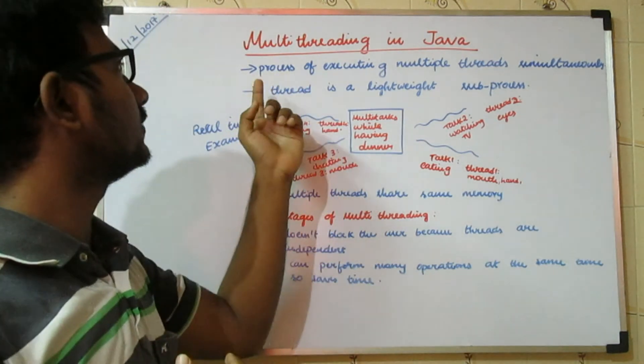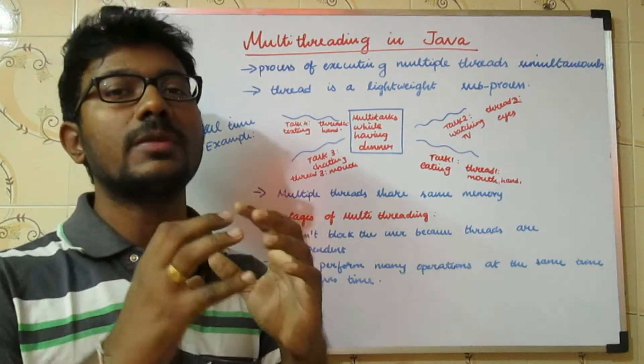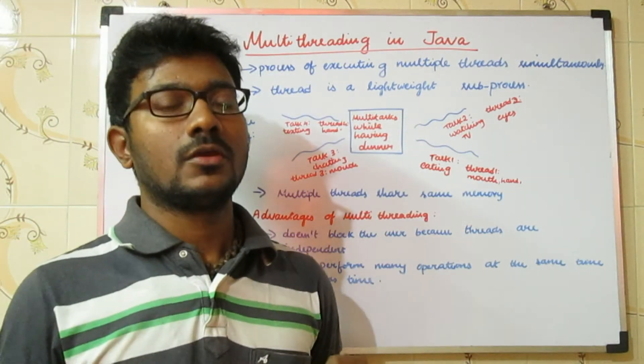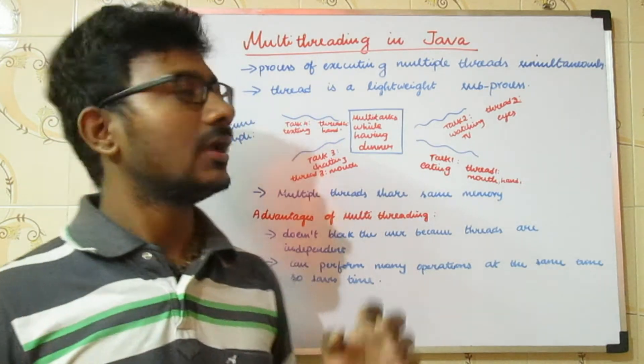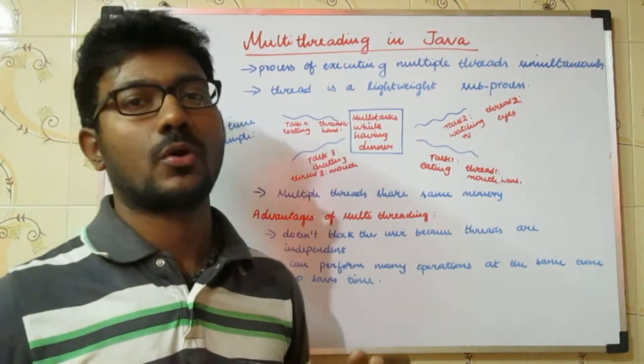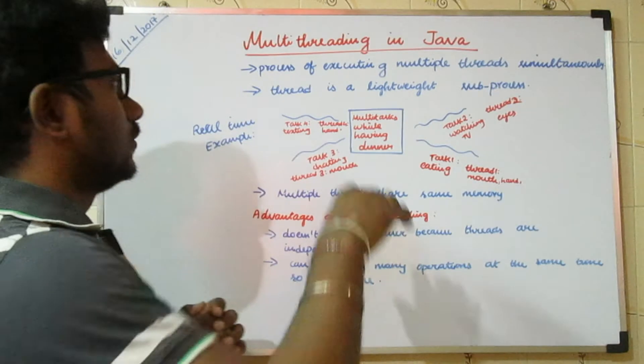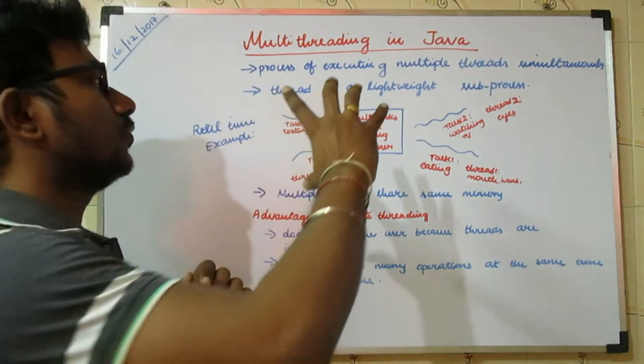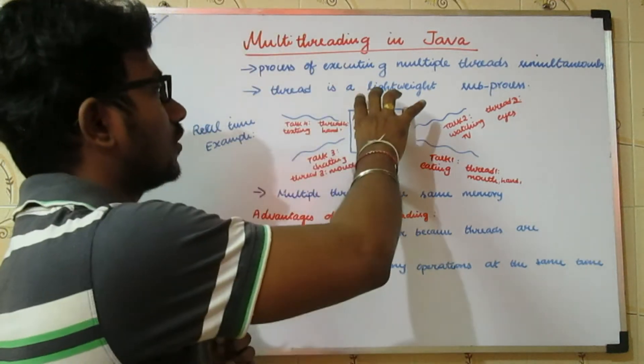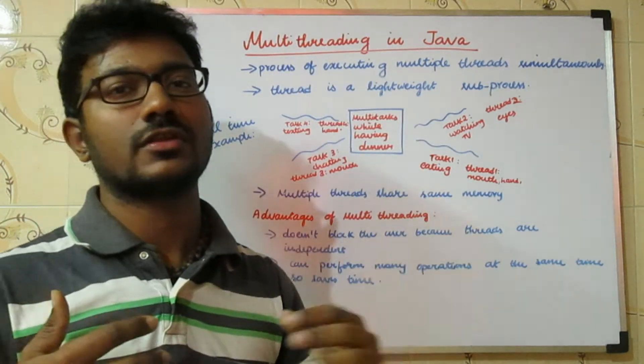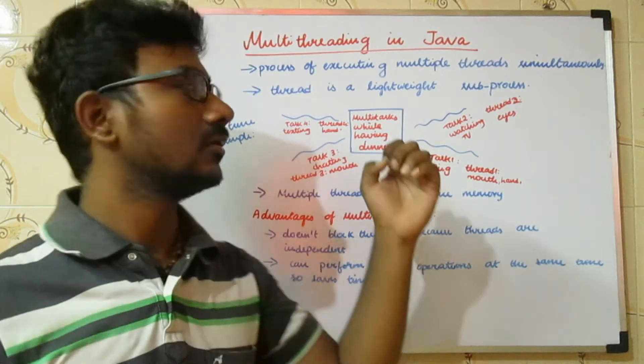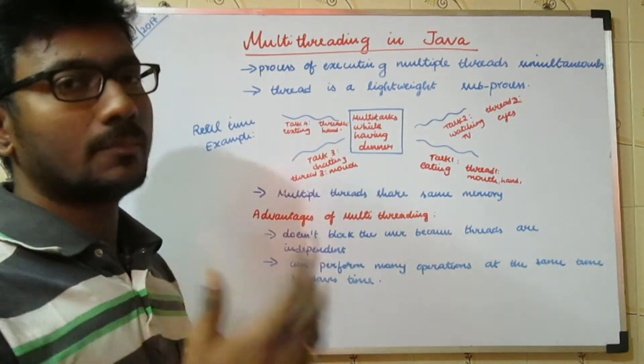The general definition of multithreading is the process of executing multiple threads. You might be confused - what's a thread? A thread is a lightweight sub-process. We'll talk about the thread using a real-time example here. If you concentrate on this example, you can easily understand the definition without much effort.